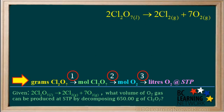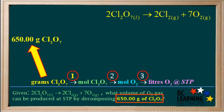So now we have a complete plan, which we'll write at the bottom: grams to moles to moles to liters. We use conversion factors to carry out the plan. We start by writing 650 grams of Cl2O7.